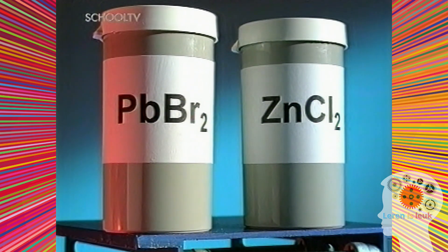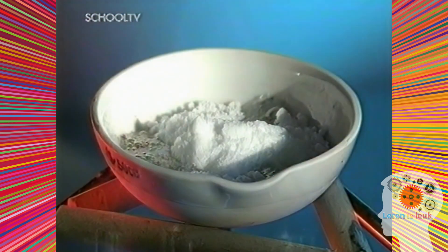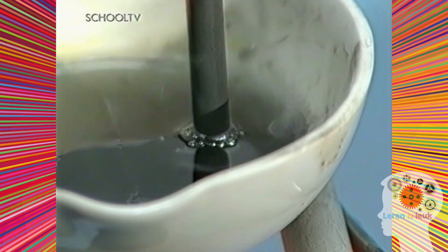Als je in plaats van loodpromide zinkchloride neemt, ontstaan er bij de elektrolyse andere producten. Wat zou er gebeuren als er stroom door zinkchloride wordt geleid? Nu verschijnen er hele bleke gasbelletjes bij de positieve elektrode. Dat gas kleurt vochtig blauw lakmoespapier rood en vervolgens verbleekt het. Dit moet chloorgas zijn.